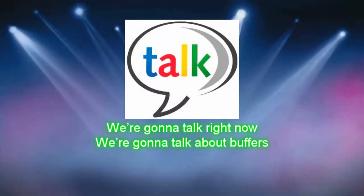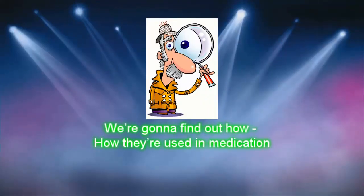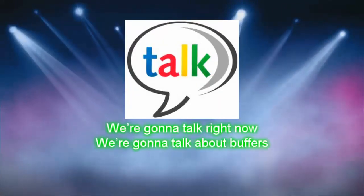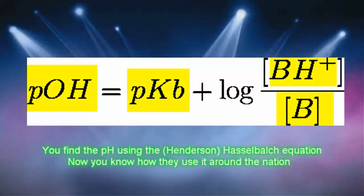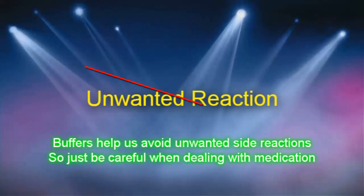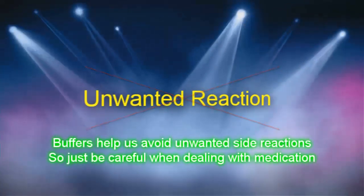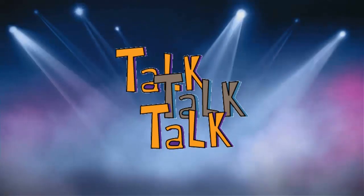We're gonna talk right now, we're gonna talk about some buffers. We're gonna find out how they're used in medication, we're gonna show you why they're used around the nation. You can find the pH using the Henderson-Hasselbalch equation — now you know how they use it around the nation. Buffers help us avoid unwanted side reactions, so just be careful when dealing with medication.